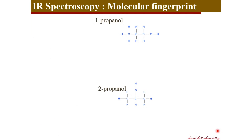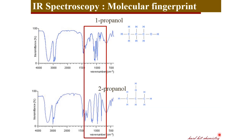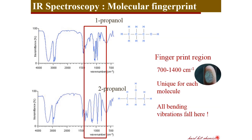Now let's look at two molecules: 1-propanol and 2-propanol. These are very similar molecules — isomers — with the difference that the hydroxyl group in 1-propanol is placed at the first carbon and in 2-propanol at the second carbon. Therefore, the IR spectra of these two molecules look very similar except for a given range. Outside this range the spectra are very similar, and the peaks present in this range distinguish the two molecules. This is true for all molecules, and therefore this particular frequency range of 700–1400 cm⁻¹ marks the fingerprint region, which is unique for each molecule. This region exclusively includes all the bending vibrations — that's how IR spectra act as a fingerprint of molecules.